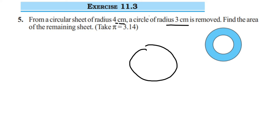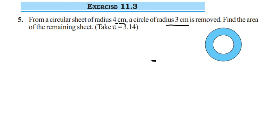How do we do it? It's very simple. From the big circle of radius 4 centimeters, we subtract the small portion — the area of the smaller circle. That remaining area is what they are asking us to find. There are two ways: find the area of the big circle (radius 4 cm), find the area of the smaller circle (radius 3 cm), and then subtract.